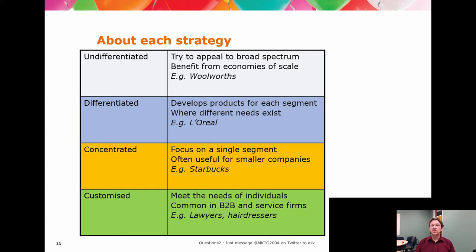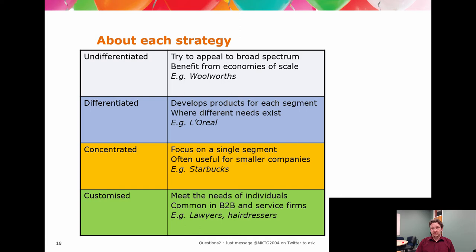The Starbucks franchise in Australia is a smaller company because it came out here with an undifferentiated strategy. It didn't realise that it needed to go with a concentrated or differentiated strategy for each of its regional outposts, and it got somewhat financially hammered for its error.